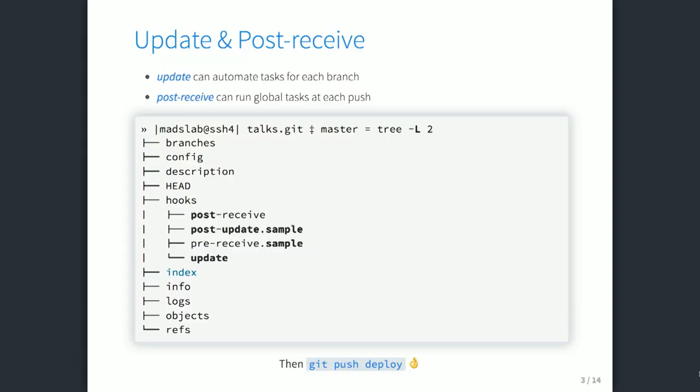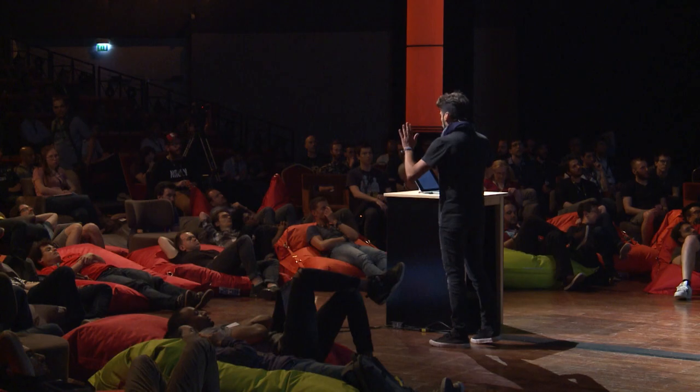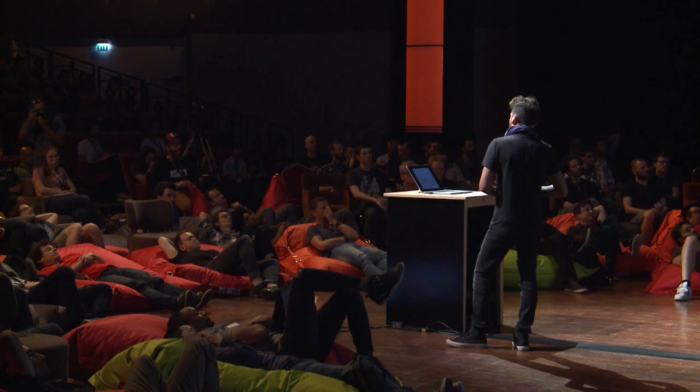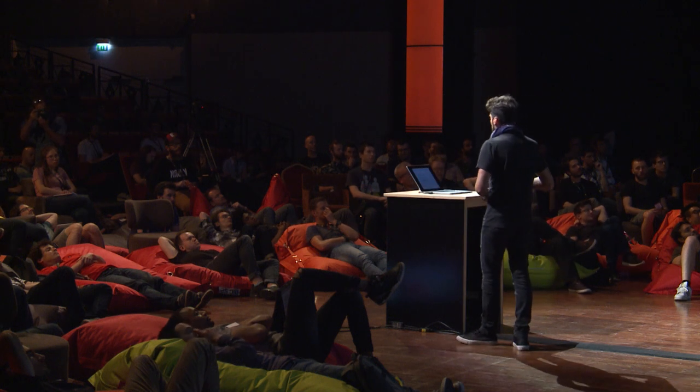You have to define some hooks on your bare repository using shell scripts — that's enough. I personally use the update and post-receive hooks, which are triggered at different times in the Git workflow. You can trigger scripts when you push each branch or when you've finished pushing all your branches to your repository. Then you just run git push to your end repository.